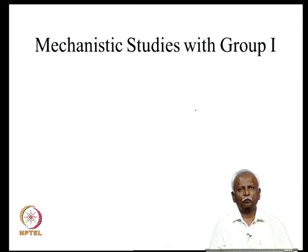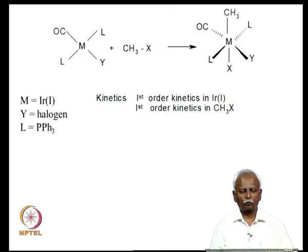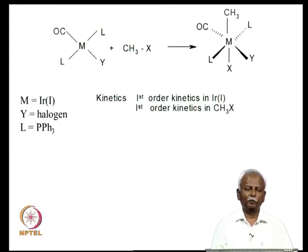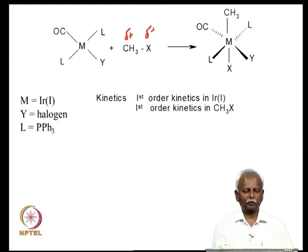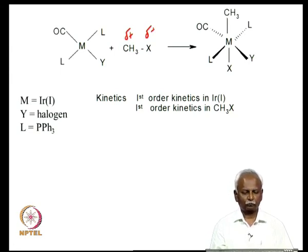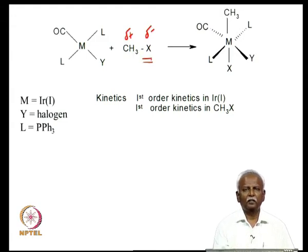Now let us look at the mechanistic studies with group 1 molecules. Group 1 molecules can be very easily polarized into plus and minus. A typical example is methyl halide, polarized as δ+ and δ−. Any good leaving group on the methyl is sufficient as X — in this example, X is a halogen. When the metal is iridium in the +1 oxidation state and L is PPh3, this is in fact Vaska's complex.